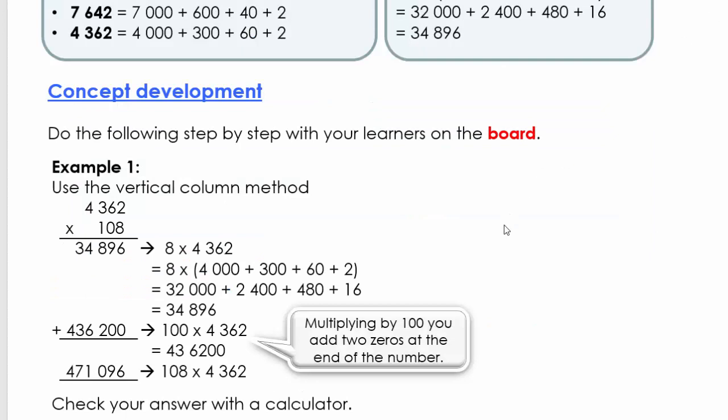Well done and welcome back. Today I'm going to explain example one and we're going to do the vertical column method, but we're still going to make use of expanded notation. Remember, we do all these things because it's small techniques that you're going to use later on in your life. Later in the year we will do the vertical column method that most of us know, where we don't do the expanded notation on the side.